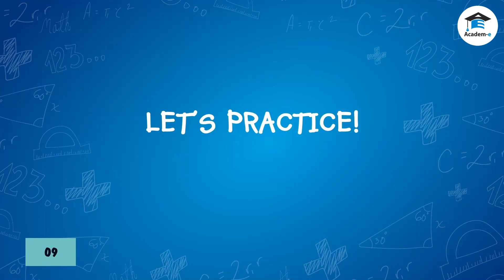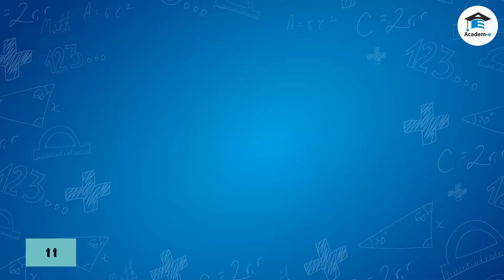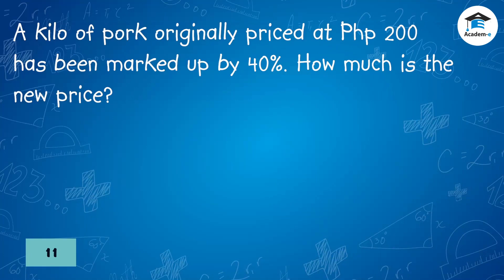Let's practice. Ziron bought a t-shirt marked 800 pesos with 20% off — how much did he pay? Answer: 640 pesos. A kilo of pork originally priced at 200 pesos has been marked up by 40% — how much is the new price? Answer: 280 pesos.